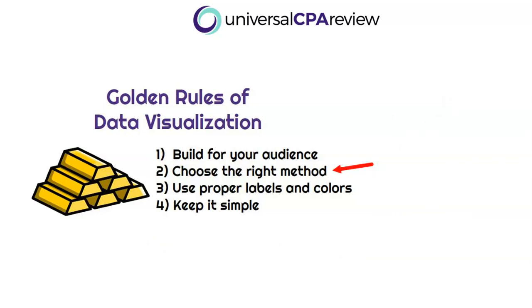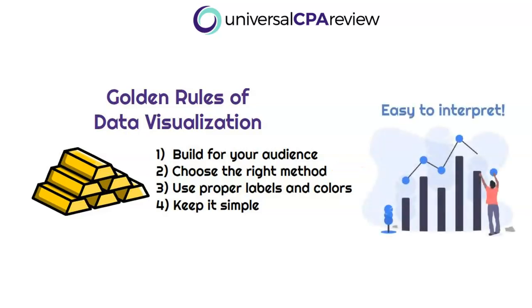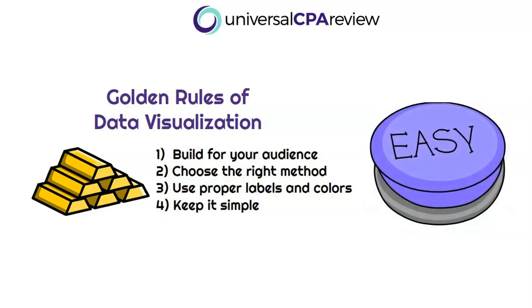Golden rule number two is to choose the right method. We just went through a bunch of data visualization charts and graphs — how do you choose the right one? That comes down to who your audience is, what they'll understand, and what question you're trying to answer. Golden rule number three: make sure there are proper labels and colors. Categorize each of the axes, add callouts, put a chart title on, and ensure that whatever you're trying to highlight stands out visually.